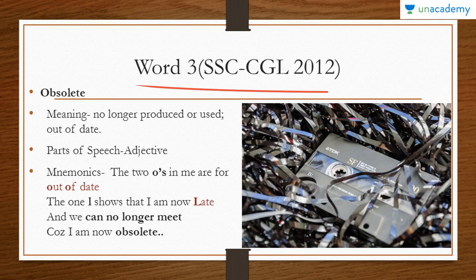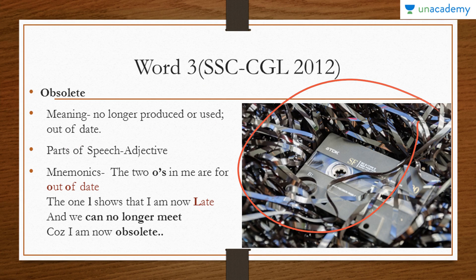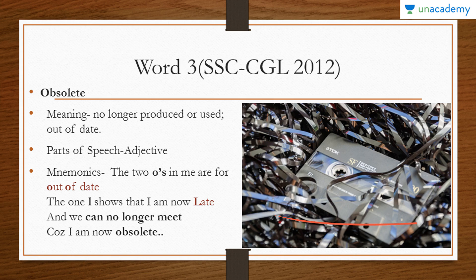Our third word, again from the same examination, is 'obsolete.' Obsolete means no longer produced or used — out of date. The photograph here shows cassettes, which were used when I was a kid. This was used at that time and now nobody uses it anymore, so it has become obsolete. The part of speech is adjective.